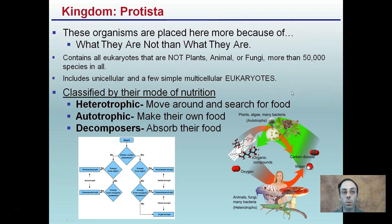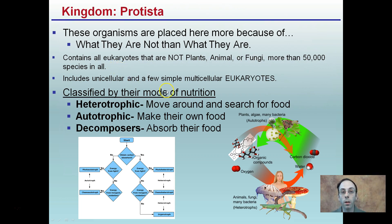Looking at the kingdom of protists, these organisms are placed here more because of what they are not than what they are. This is the most diverse kingdom, containing all eukaryotes that are not plants, animals, or fungi — over 50,000 species in all. This includes unicellular as well as a few simple multicellular eukaryotes. Nutrition mode classifies some protists: some are heterotrophic, some are autotrophs, and some are decomposers.